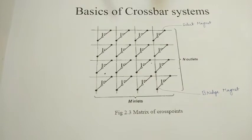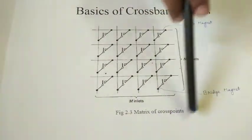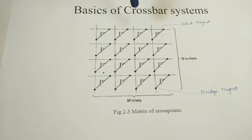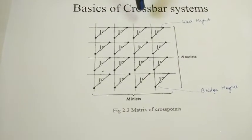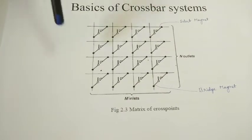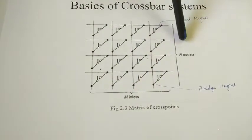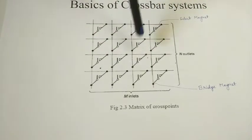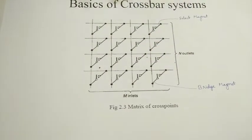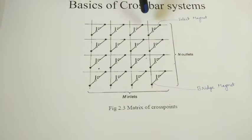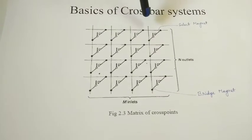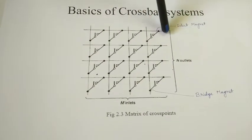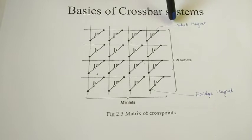With the assistance of that, we have a matrix of cross points, which is shown in the figure. This matrix of cross points has M inlets and N outlets. Both are connected at one point, and because they are connected crossly, they are called a crossbar system, which is operated by two magnets.